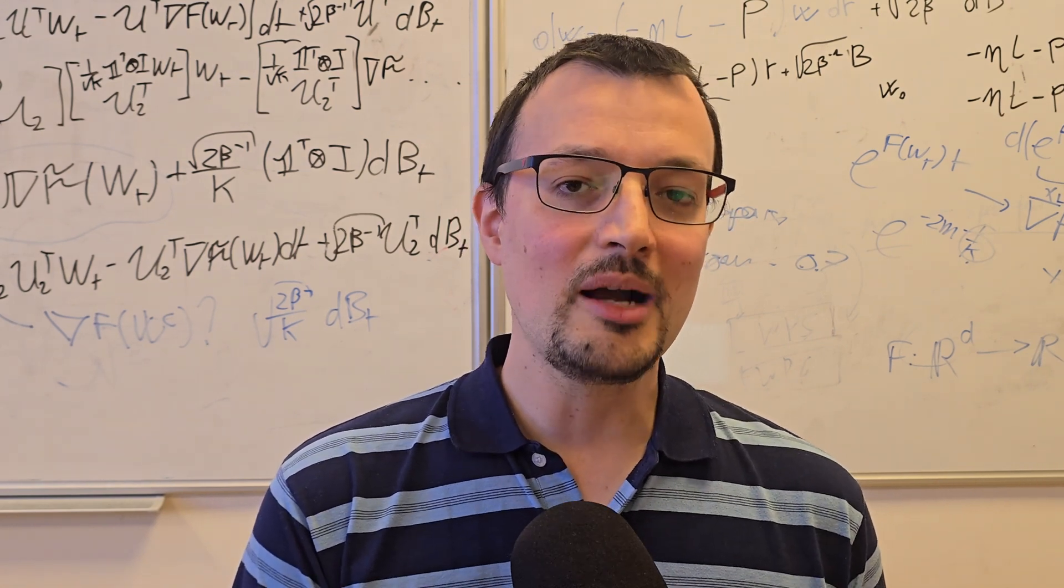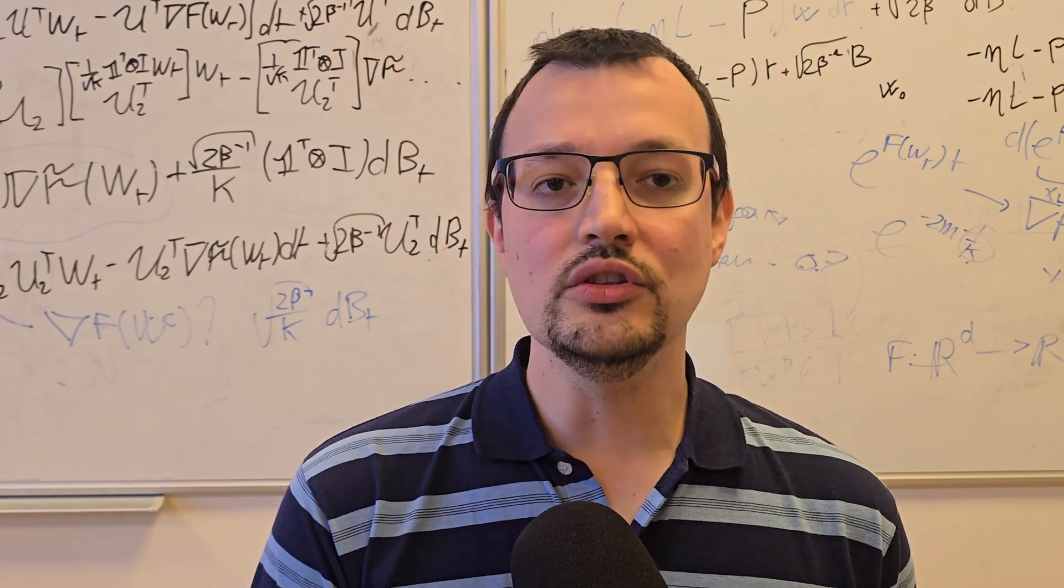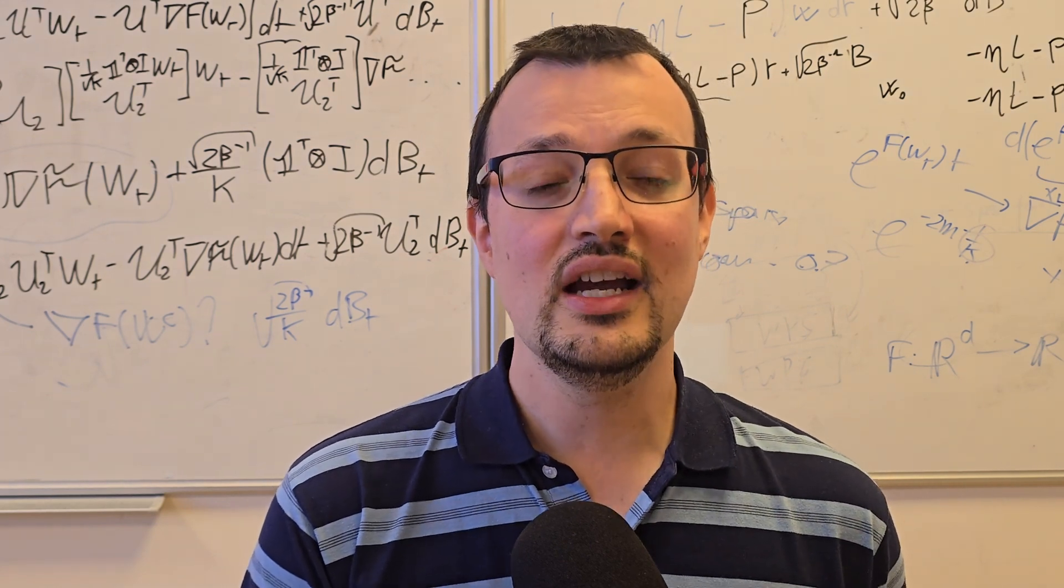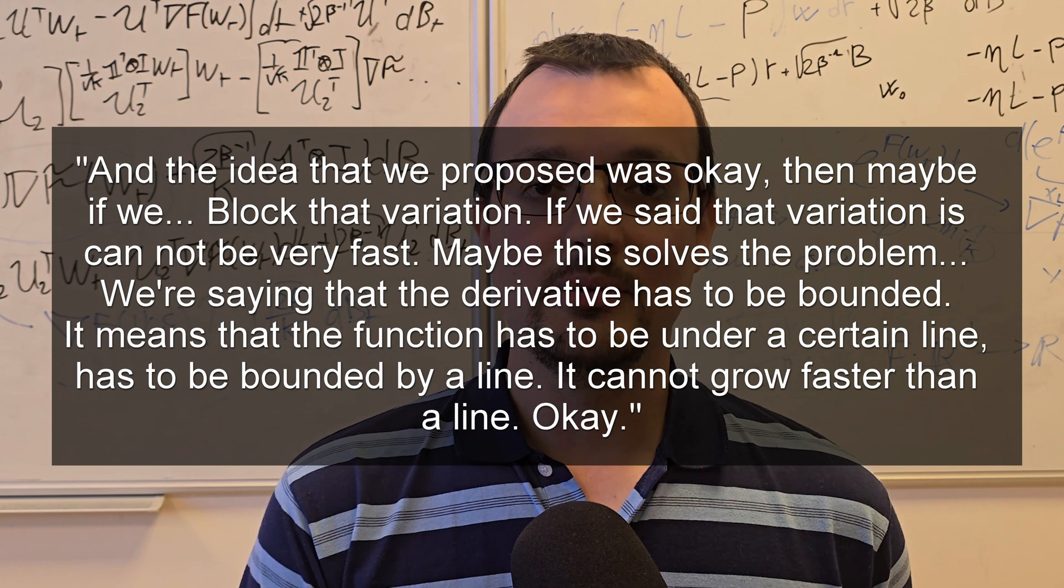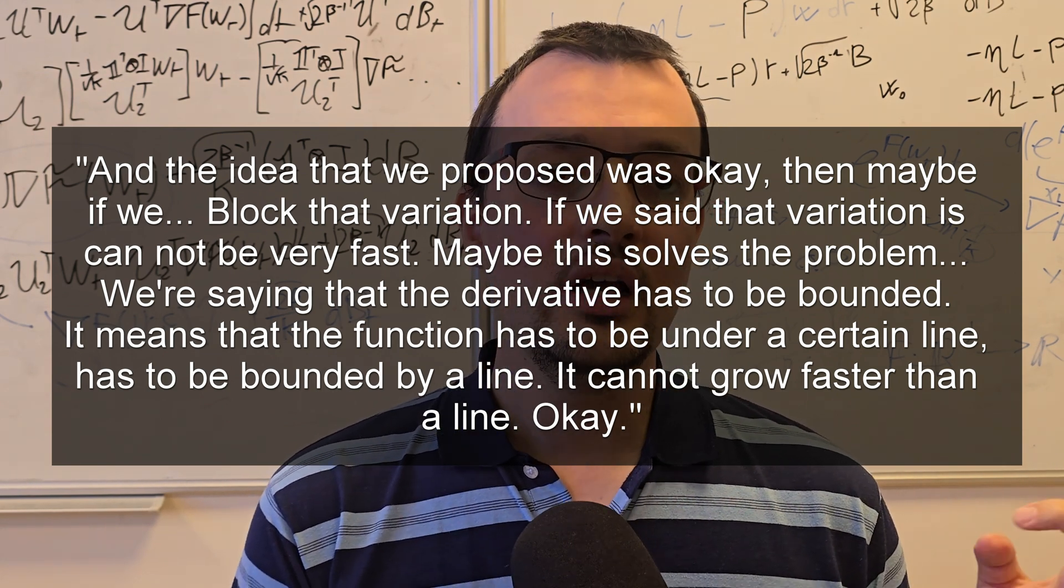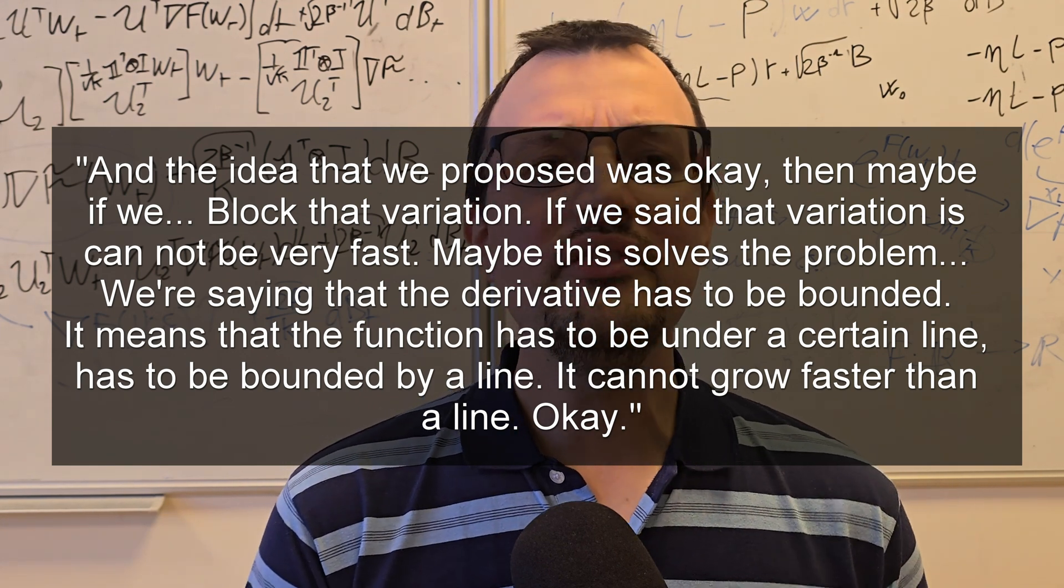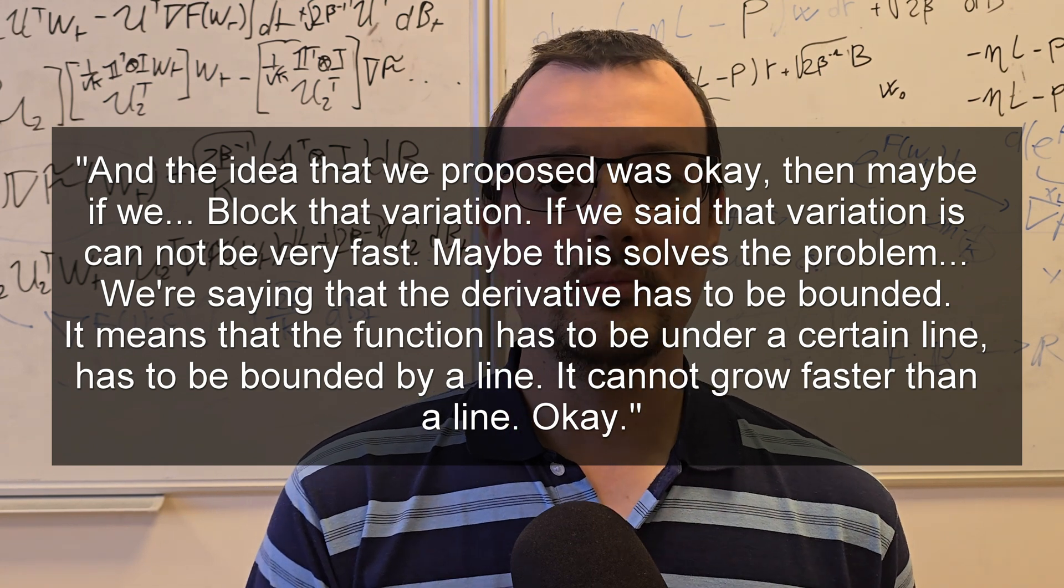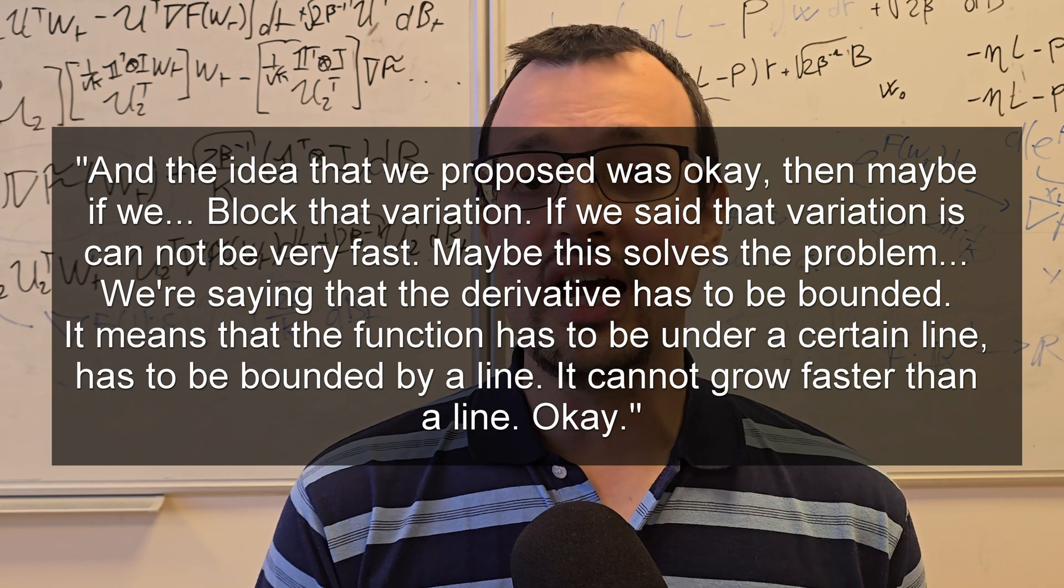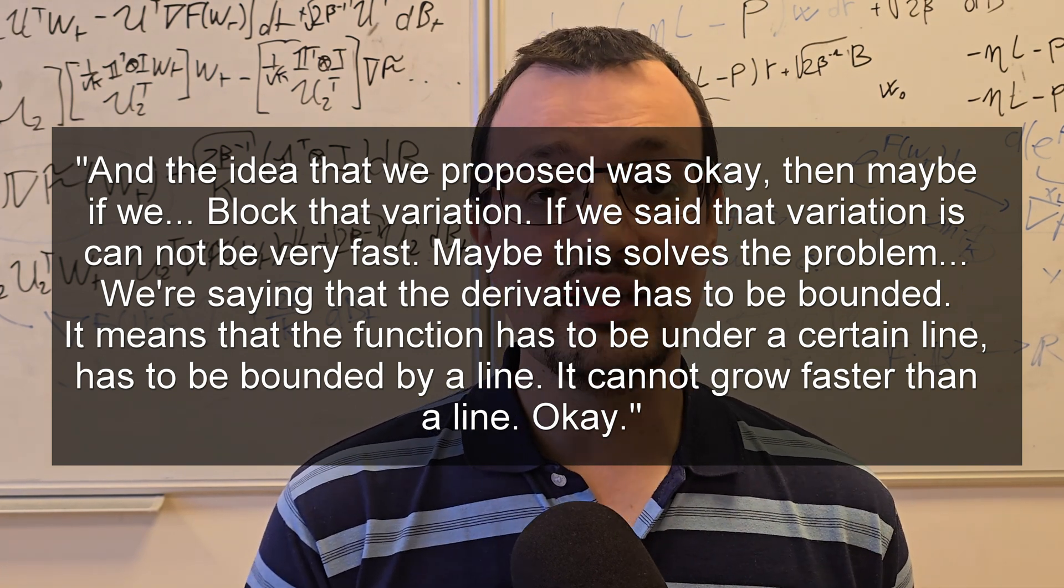What happens when I discuss a more abstract and difficult concept? In the next lecture I talked about the conditions for the existence and uniqueness of solutions of differential equations, a tricky topic. So let's look at the transcript. And the idea that we proposed was okay. Then maybe if we block that variation, if we say that variation cannot be very fast, maybe this solves the problem. We are saying that the derivative has to be bounded. It means that the function has to be under a certain line, has to be bounded by a line. It cannot grow faster than a line. Okay.